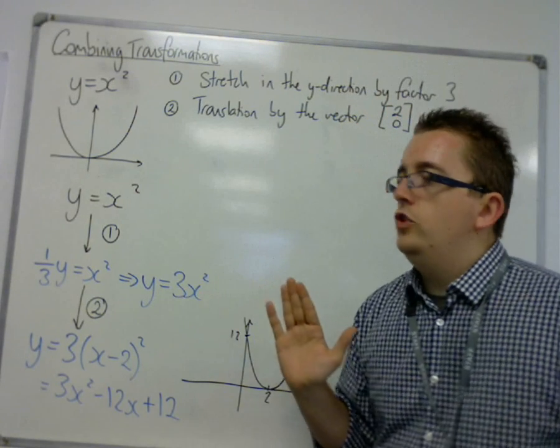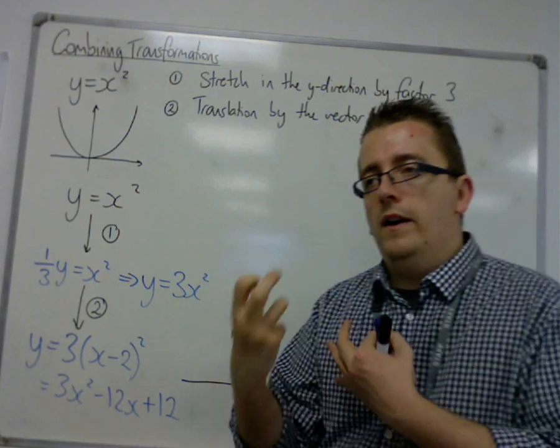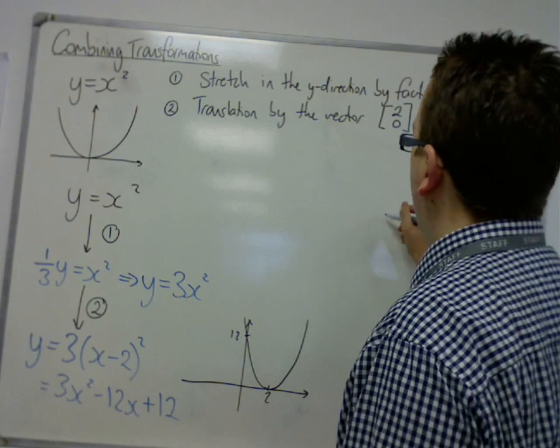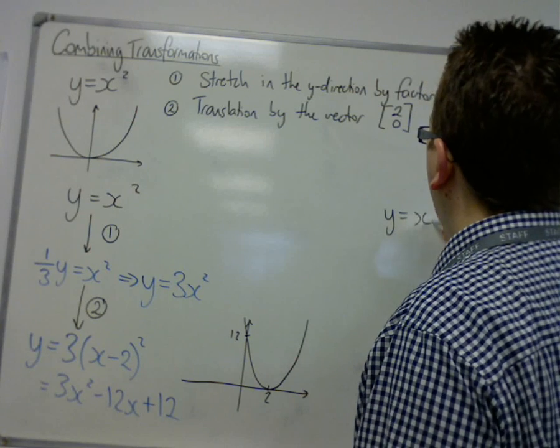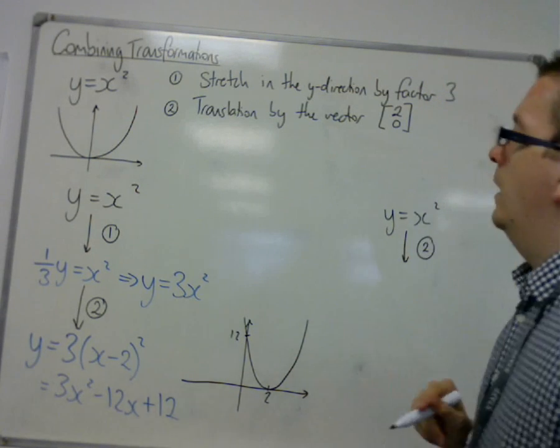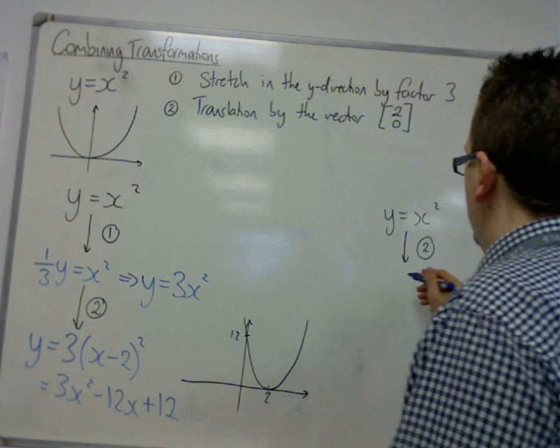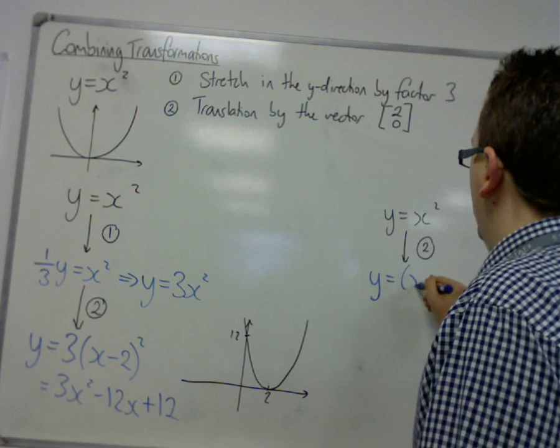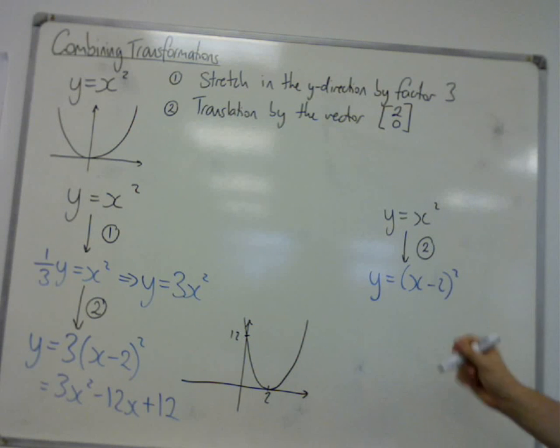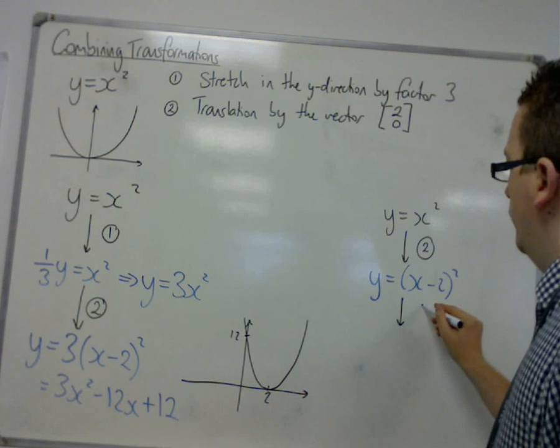Let's see if anything changes when I reverse the order. So let's say we've got y equals x squared starting off that one. And now I'm going to apply transformation 2. So transformation 2 is the translation. So we get y equals (x minus 2) all squared. Then I apply the stretch.